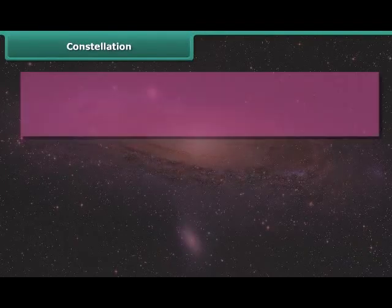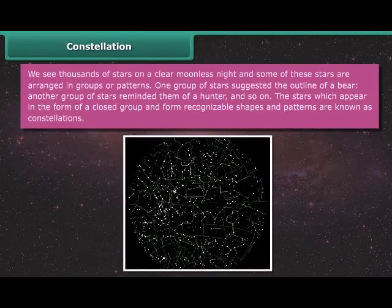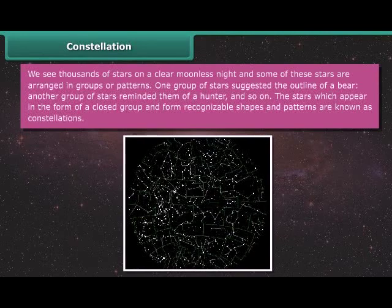We see thousands of stars on a clear moonless night, and some of these stars are arranged in groups or patterns. One group of stars suggested the outline of a bear. Another group of stars reminded them of a hunter. The stars which appear in the form of a closed group and form recognizable shapes and patterns are known as constellations.